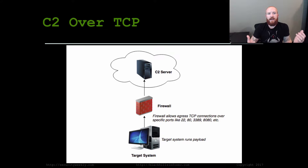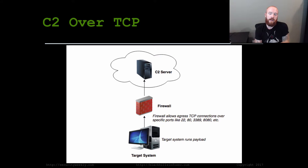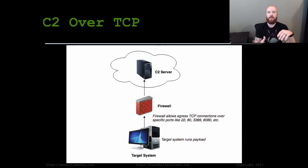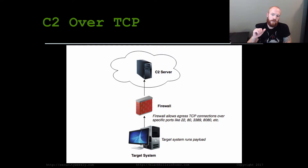First off, we have your very basic C2 over TCP. This is one of your most common mechanisms to establish a connection — literally a payload running that is connecting directly through a firewall on a specific port to a server on the internet. This often arises if an organization hasn't done any sort of egress filtering protection, where a firewall admin lets every client on the network connect out on whatever port they want.